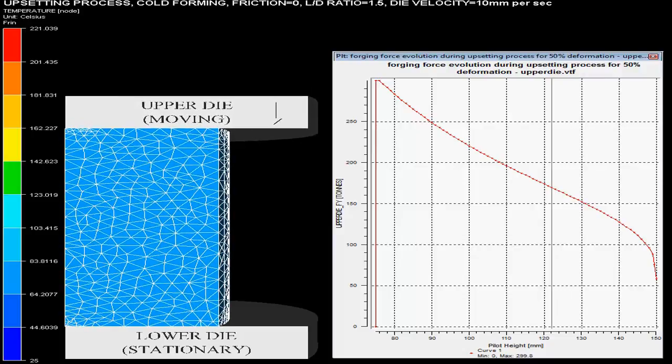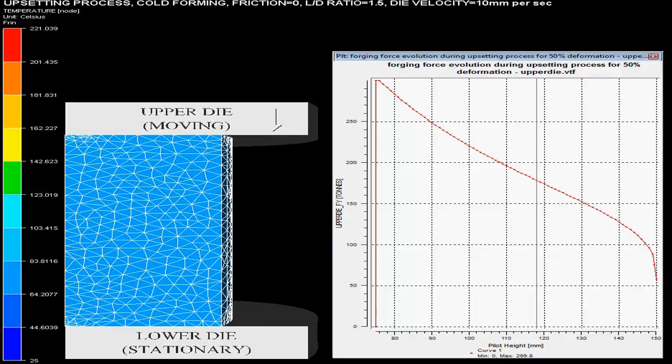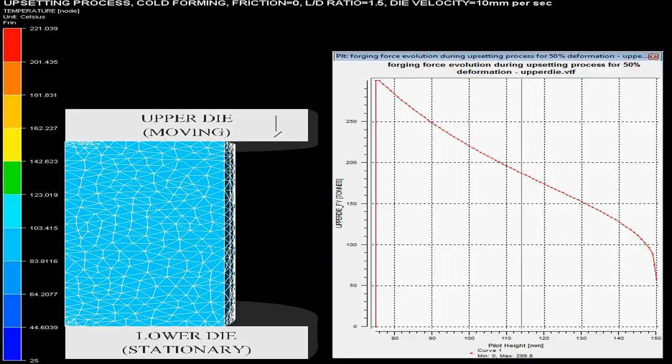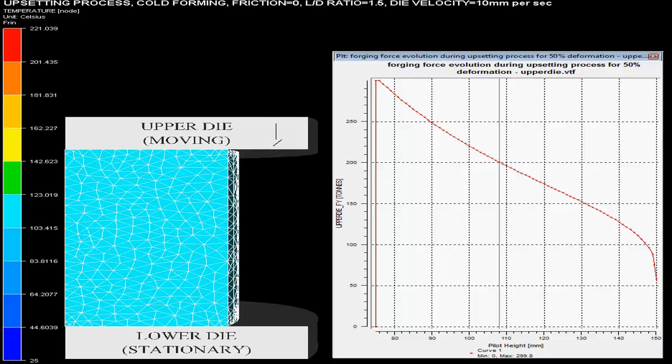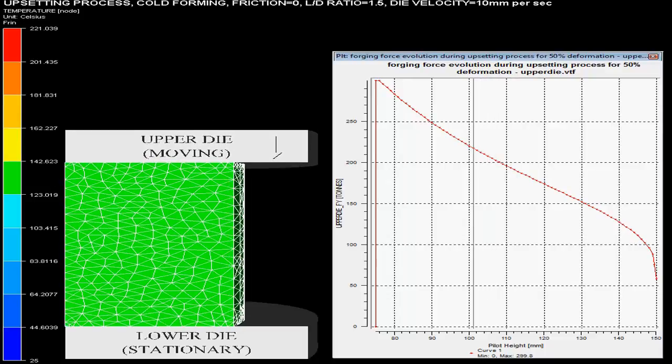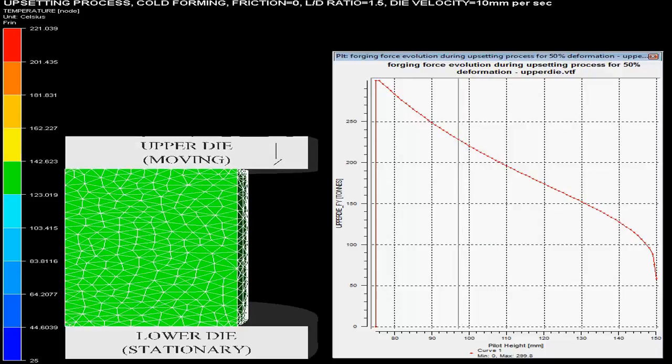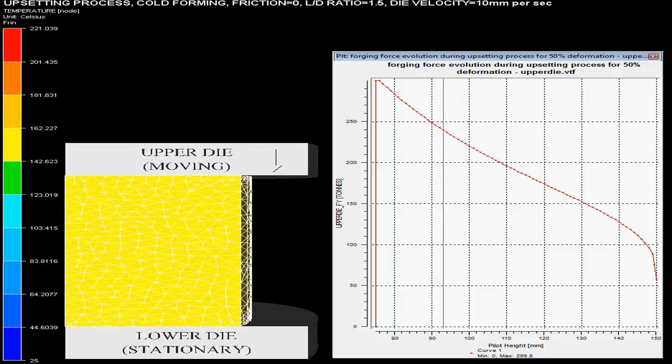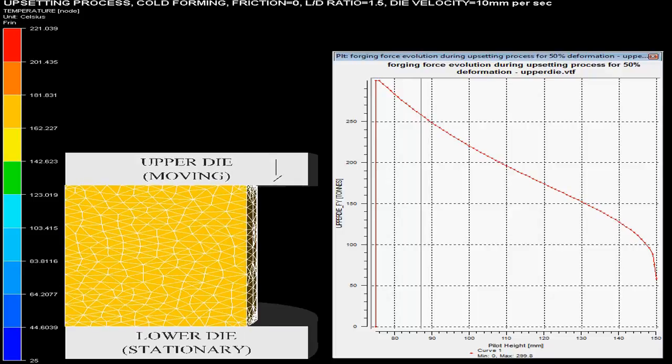The reduction produced after forging is 50%, and the press used is a hydraulic press. The graph on the right side shows the evolution of the forging force with billet height during the punch stroke. The maximum forging force required is 299.8 tons.